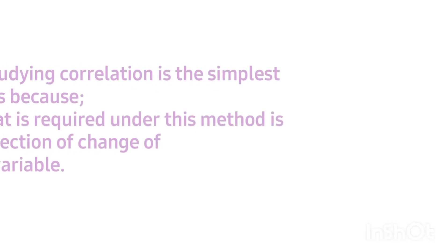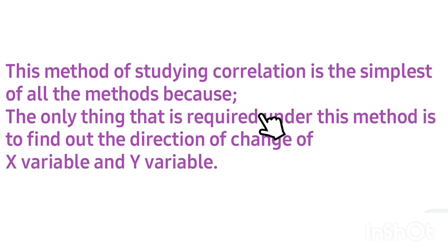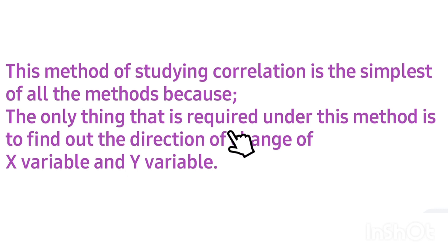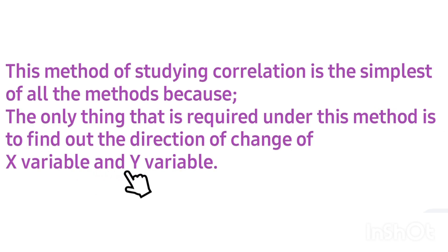The concurrent deviation method of studying correlation is the simplest of all the methods, because the only thing required under this method is to find out the direction of change of the X variable and the Y variable.